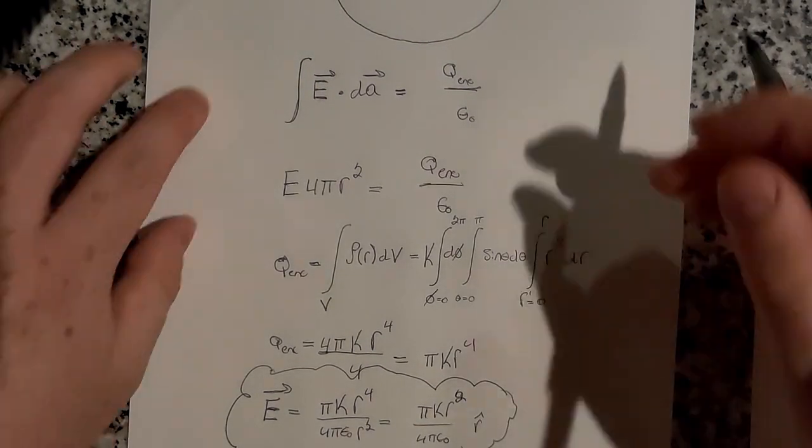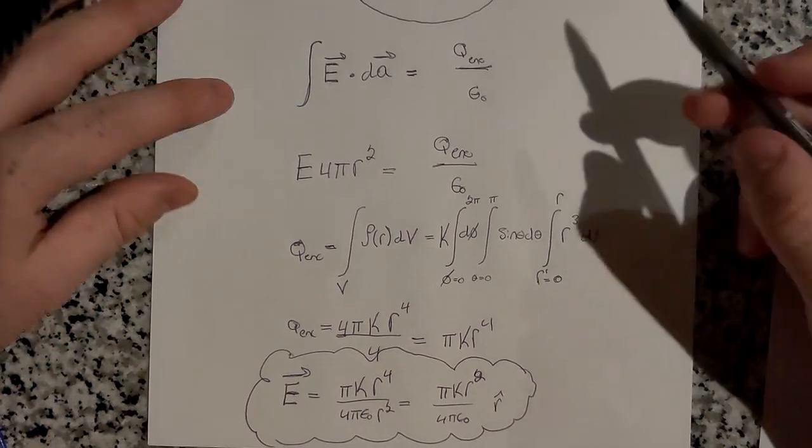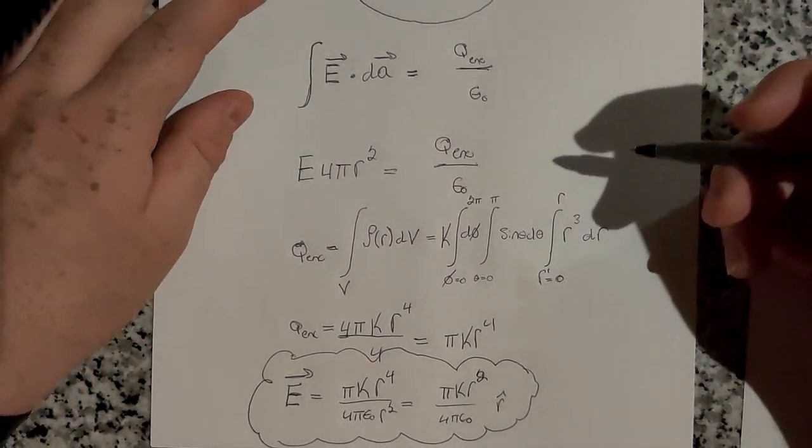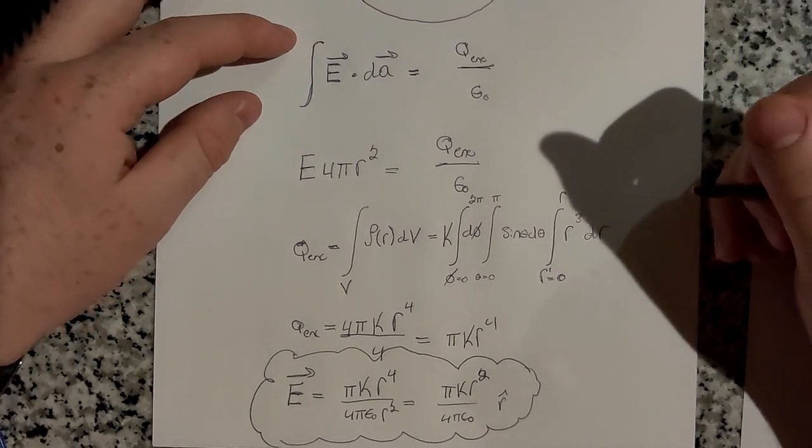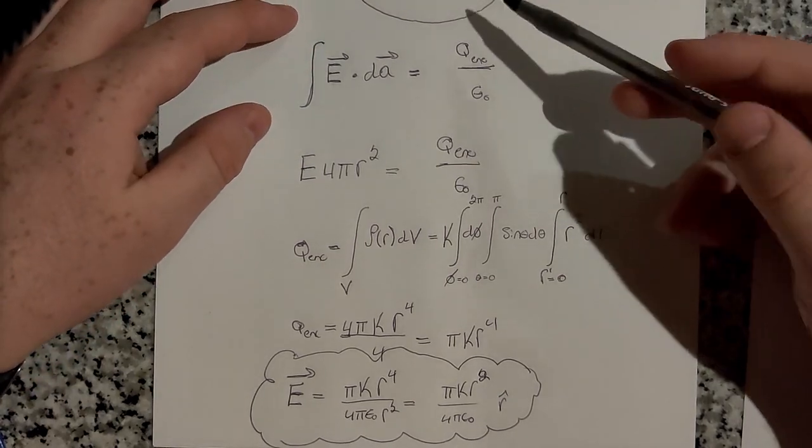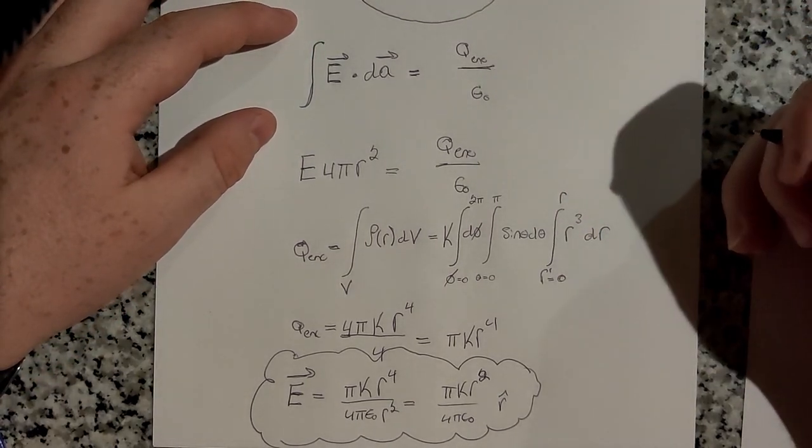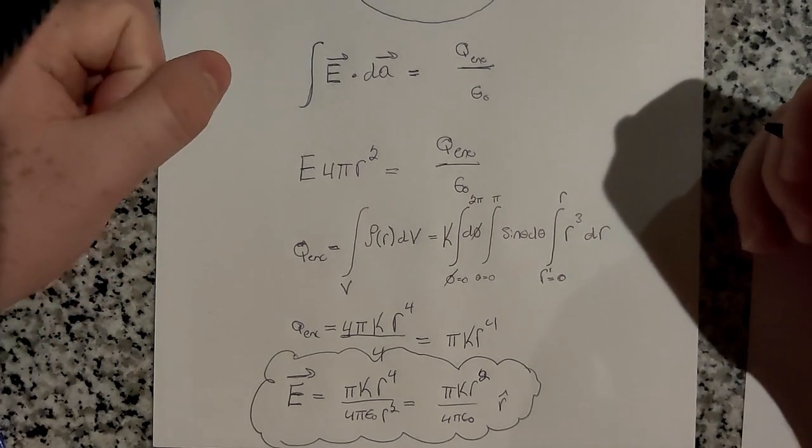All right. So that's about it. Gauss's law, again, saves us from doing a ton of work. It's just a bunch of little simple integrals and just taking advantage of the spherical symmetry of the problem. So, yeah, that's about it.